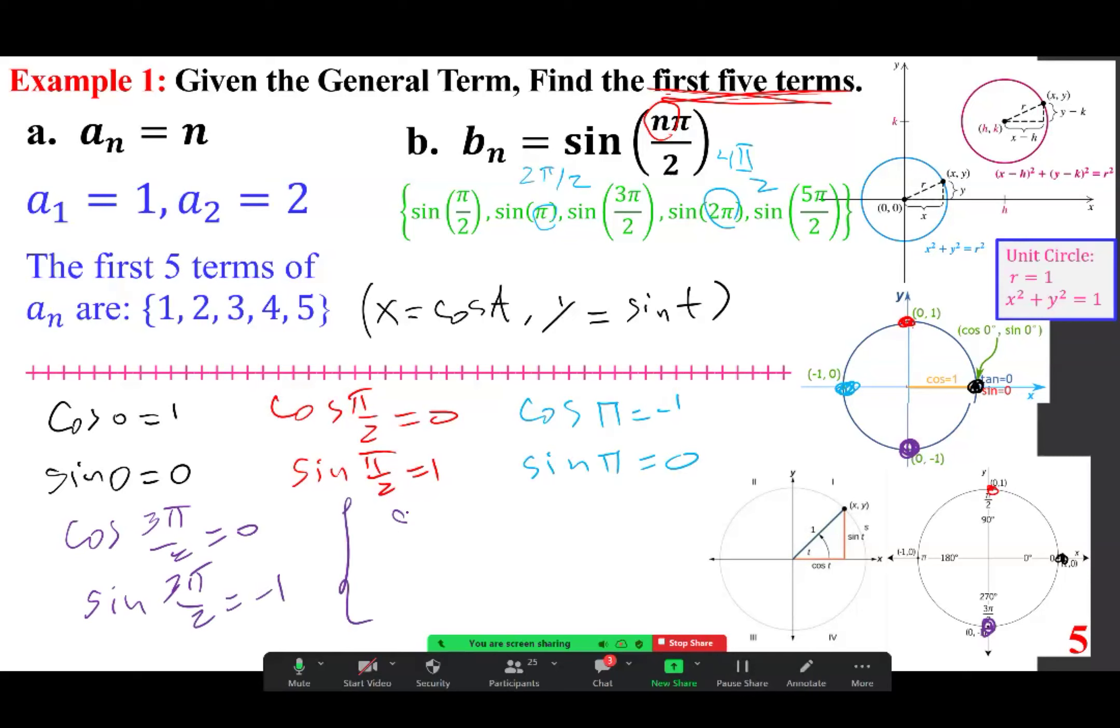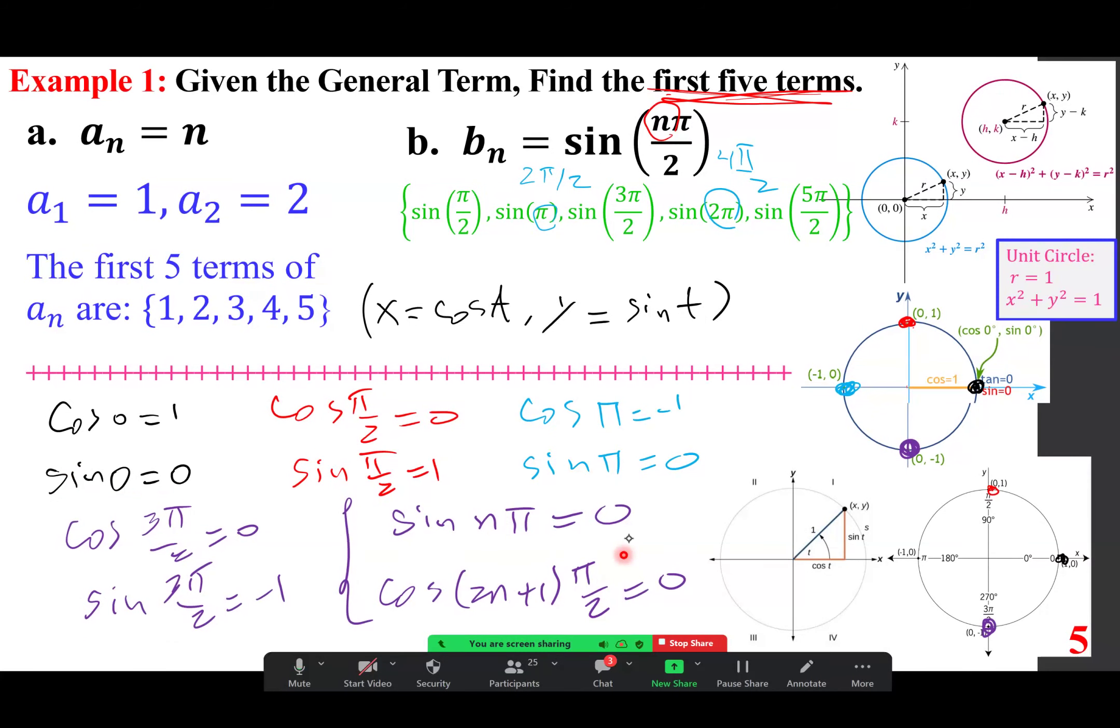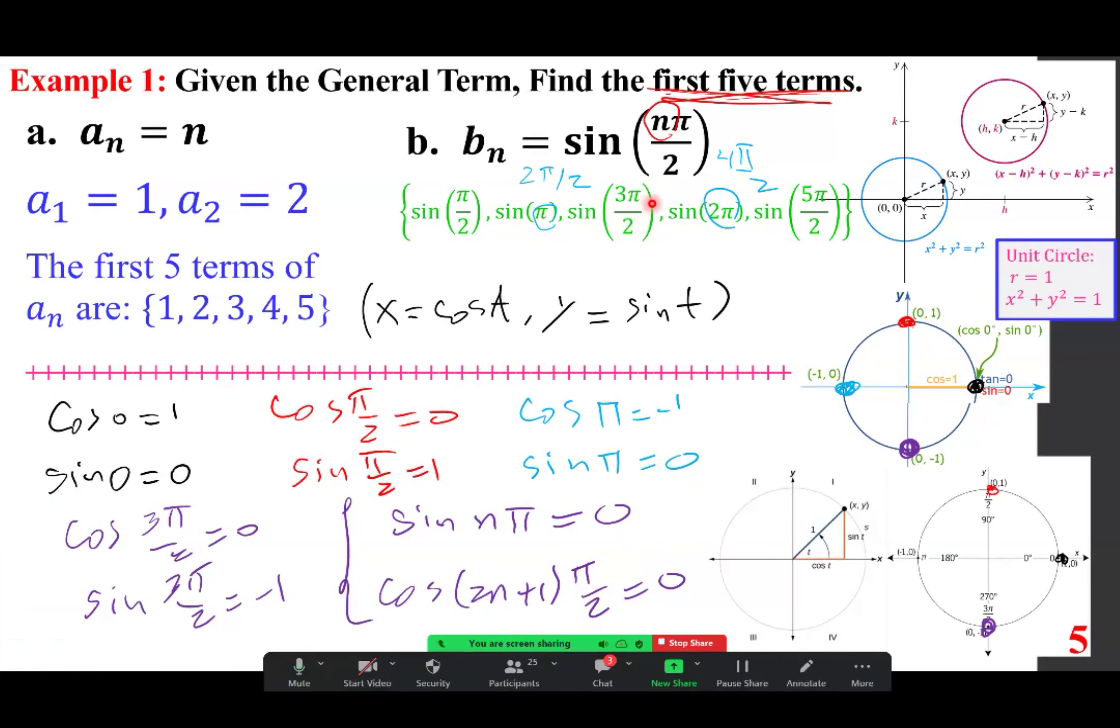So the general idea is that sine of n pi becomes 0. Cosine of 2n plus 1 pi over 2 is 0. I want to make sure that we understand what's going on here. n pi, that means if you multiply pi by any integer, you end up with 0. But 2n plus 1 times pi over 2 means odd multiples of pi over 2. So with that being the case, sine of pi over 2 is 1. Sine of pi is 0. Sine of 3 pi over 2 is negative 1. Sine of 2 pi goes back to 0. 0 and 2 pi are the same. It's 0. So 5 pi over 2, that means a complete revolution of 2 pi plus pi over 2. So this is the same as pi over 2. And that becomes 1. So those are the answers.